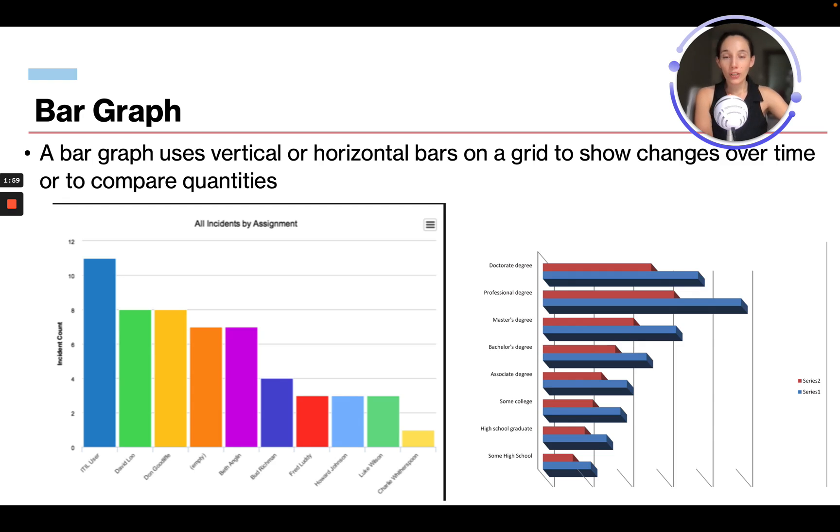So first thing we're going to look at are some different types of graphs. A bar graph uses vertical or horizontal bars on a grid to show changes over time or to compare quantities. So we can see this is a bar graph.